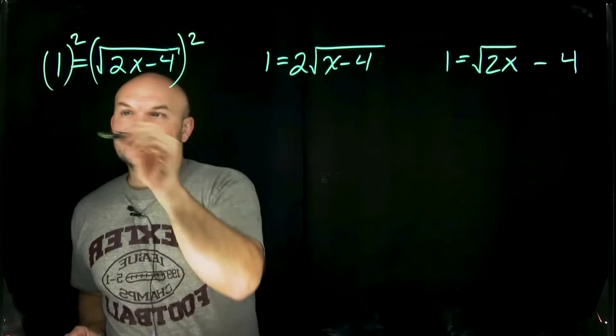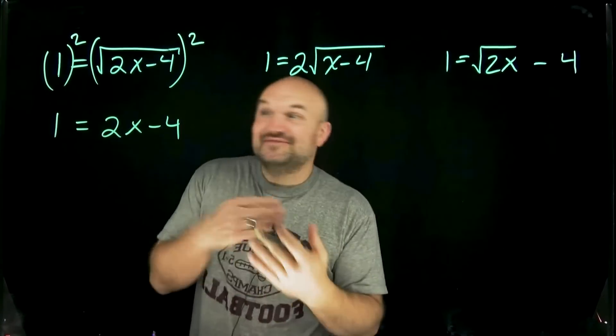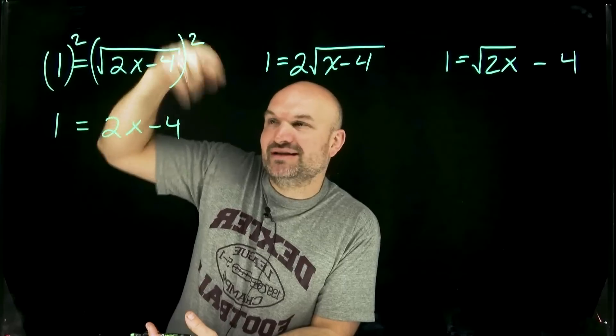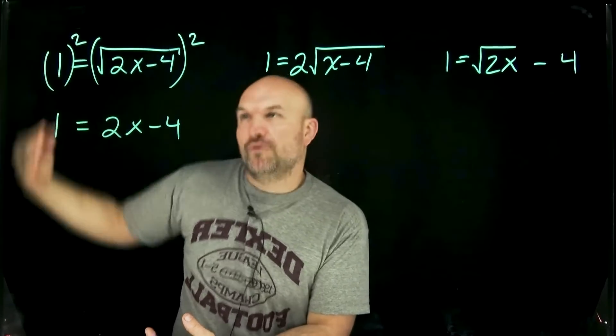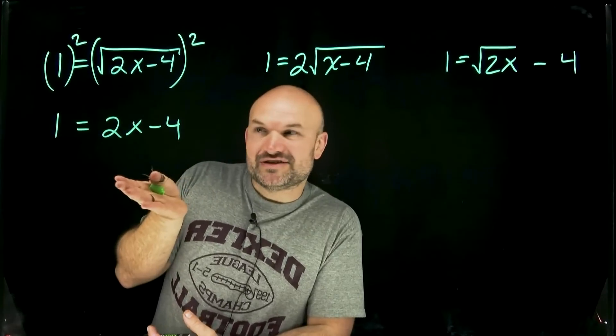Now by squaring both sides I'm going to be left with 1 equals 2x minus 4. Now our life just got way easier because the inverse operation of the square root is going to be squaring, the cube root would be cubing, fourth root would be raising to the fourth power, and now you can see we just have a two-step equation.